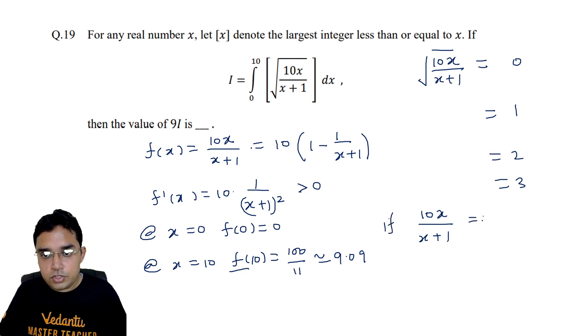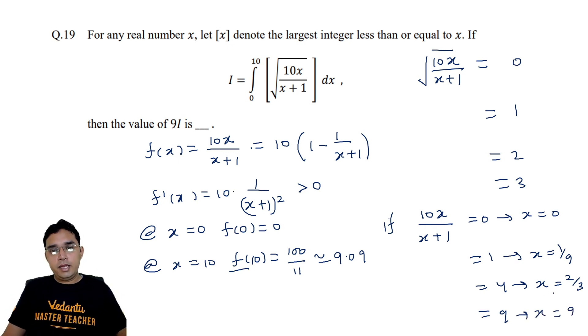...is either 0, which is when x equals 0, or it is 1 when x equals 1/9, or it equals 4 when x equals 2/3, and this equals 9 when x equals 9 itself. You can check the calculation.